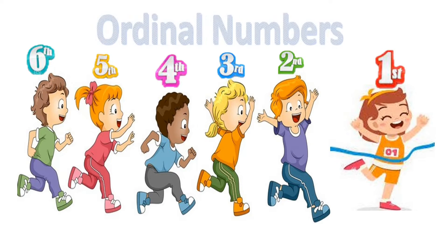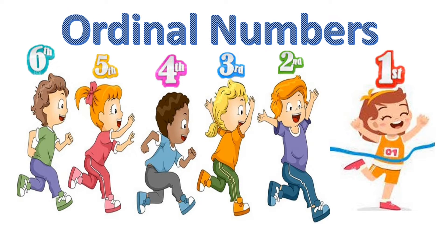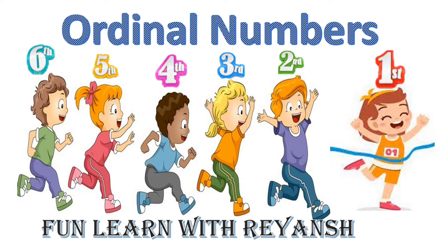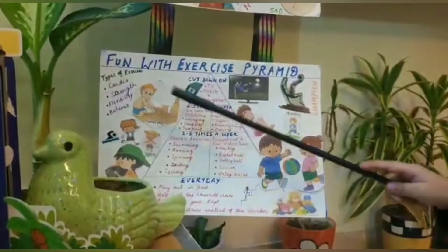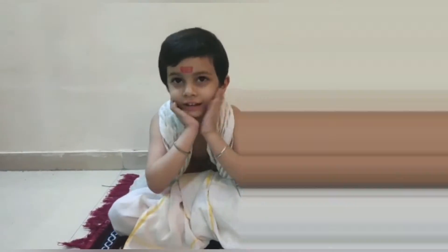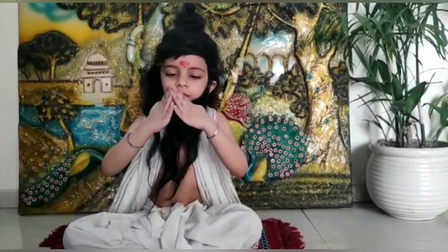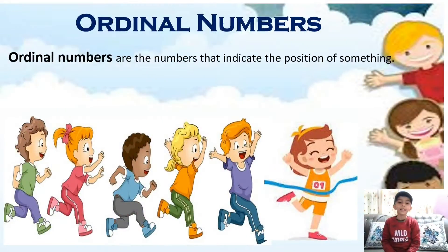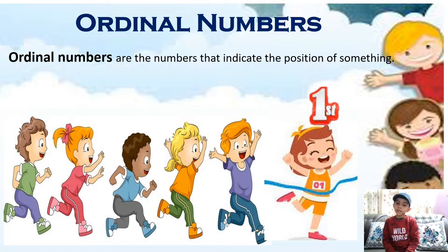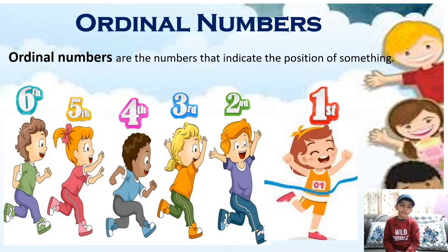Friends, today we will learn ordinal numbers in Fun Learn with Rayaan. Ordinal numbers are the numbers that indicate the position of something or someone — like 1st, 2nd, 3rd, 4th, 5th, 6th.